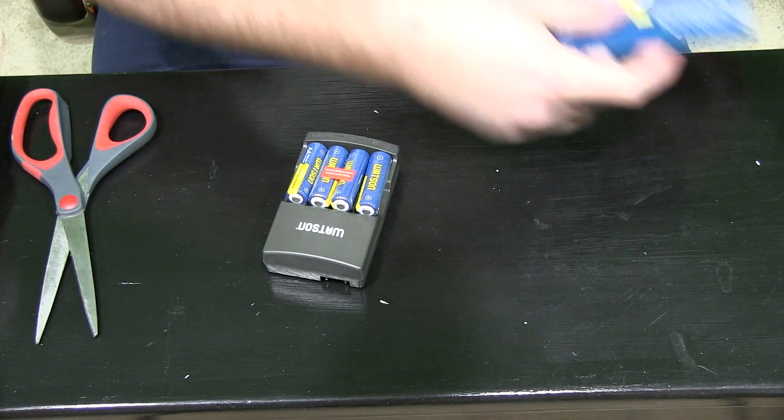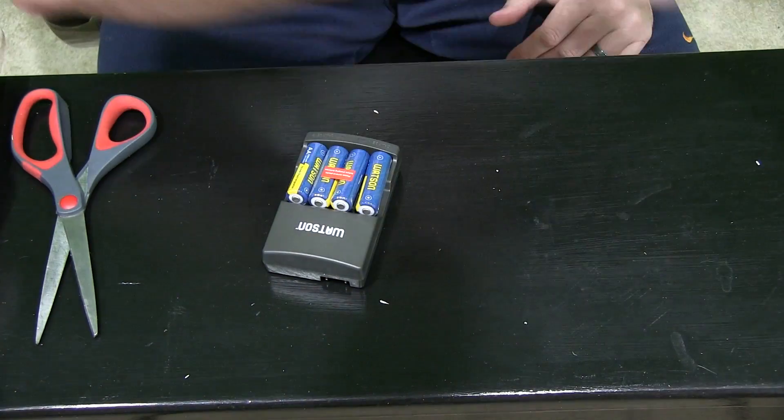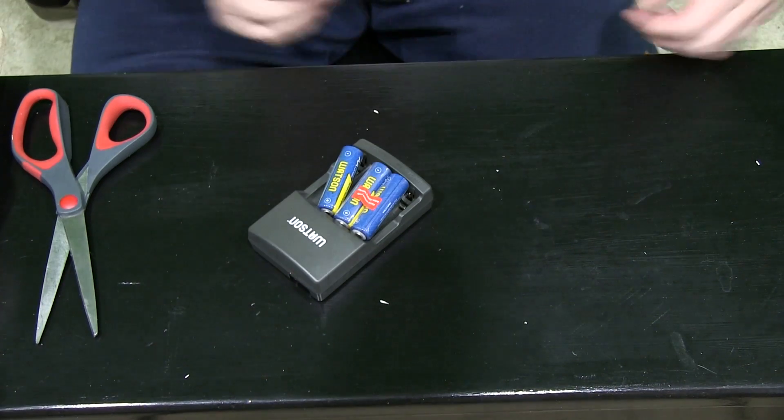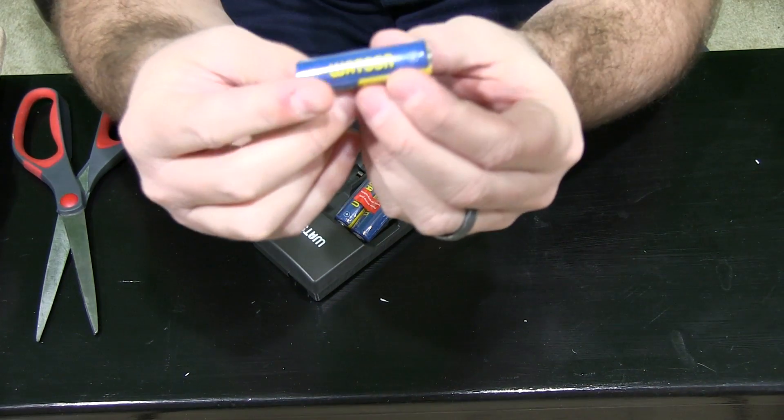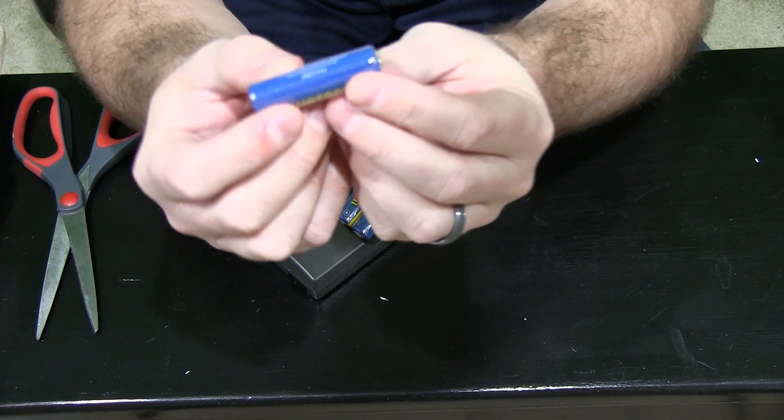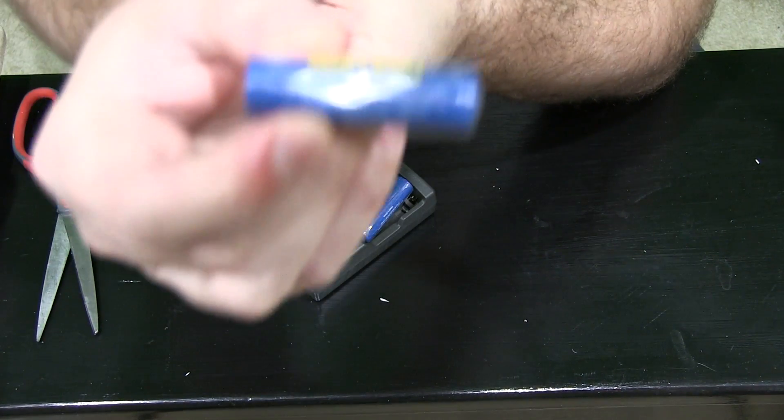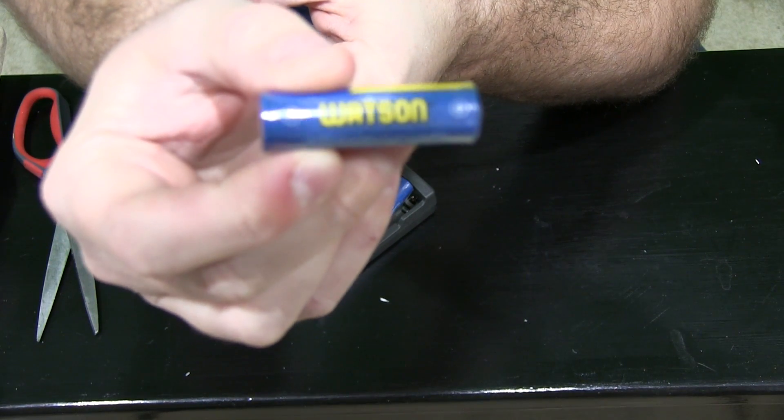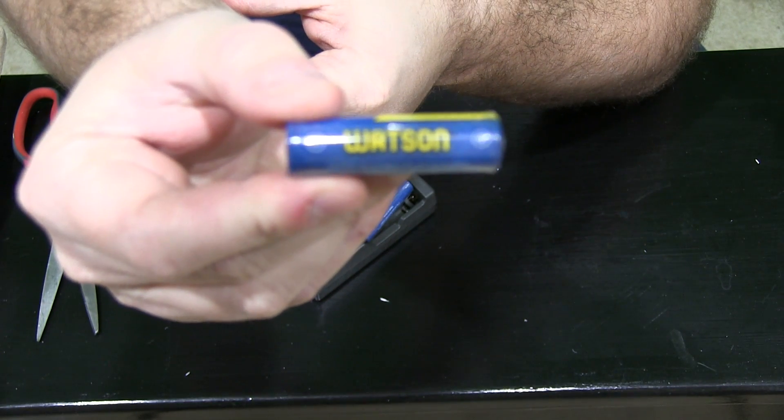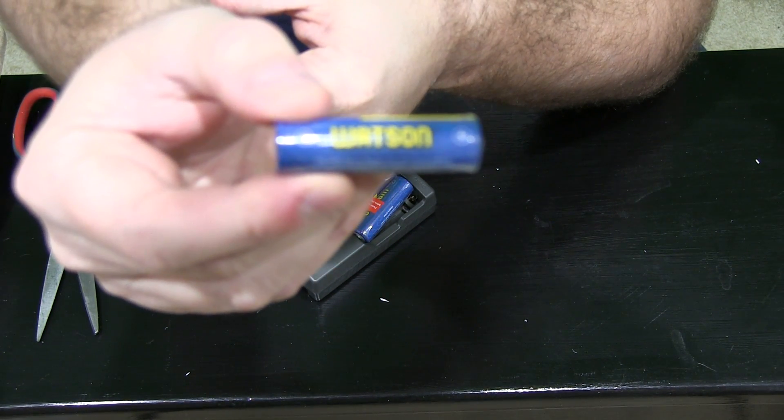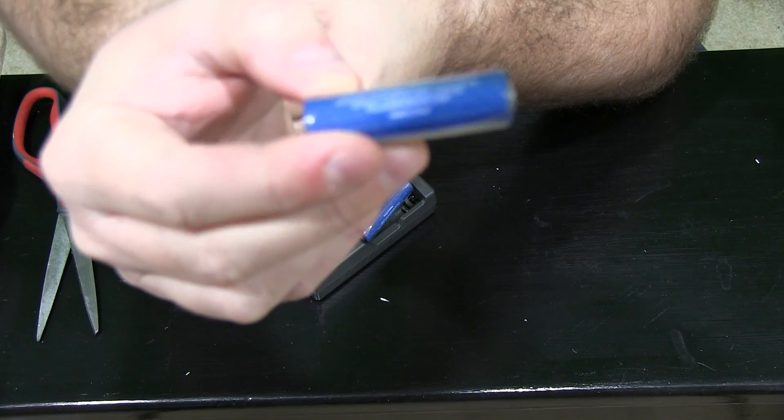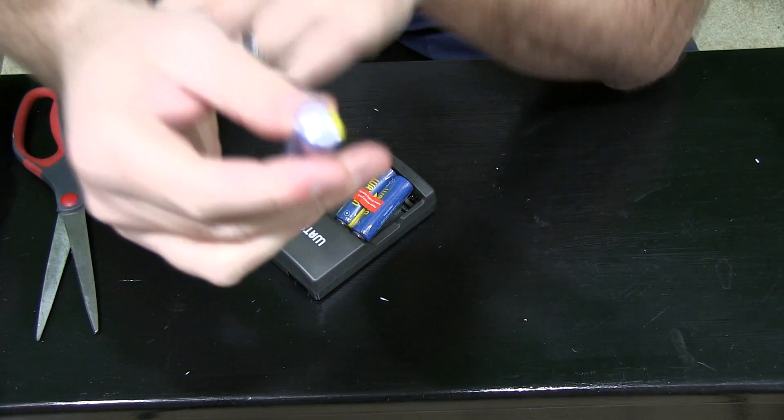So let's get started. Right there you've got four batteries that are individually wrapped so you can tell that they haven't been used. Watson NIMH rechargeable, again these are AA batteries, so I've got four of those.